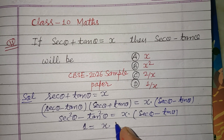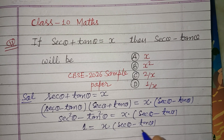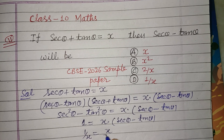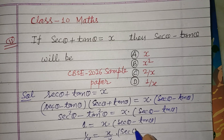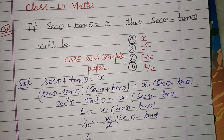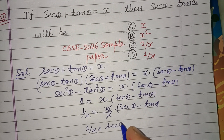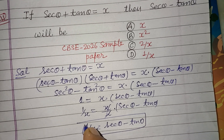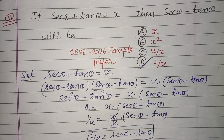So we have 1 = X times (sec θ - tan θ). Dividing both sides by X gives us 1/X = sec θ - tan θ. Therefore, the value of sec θ - tan θ is 1/X, which corresponds to option D. Option D is correct.